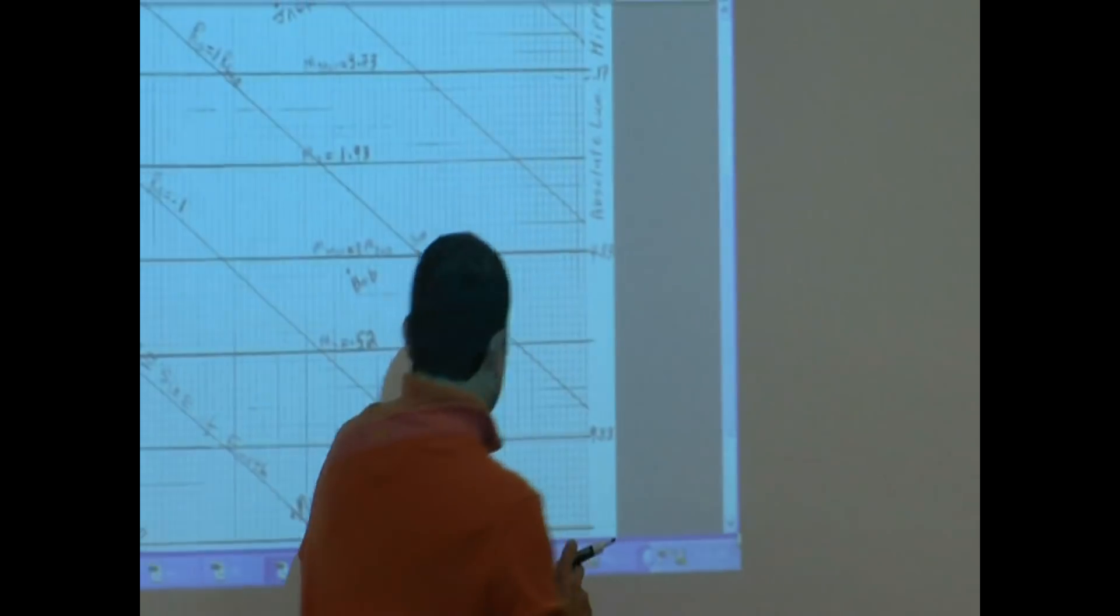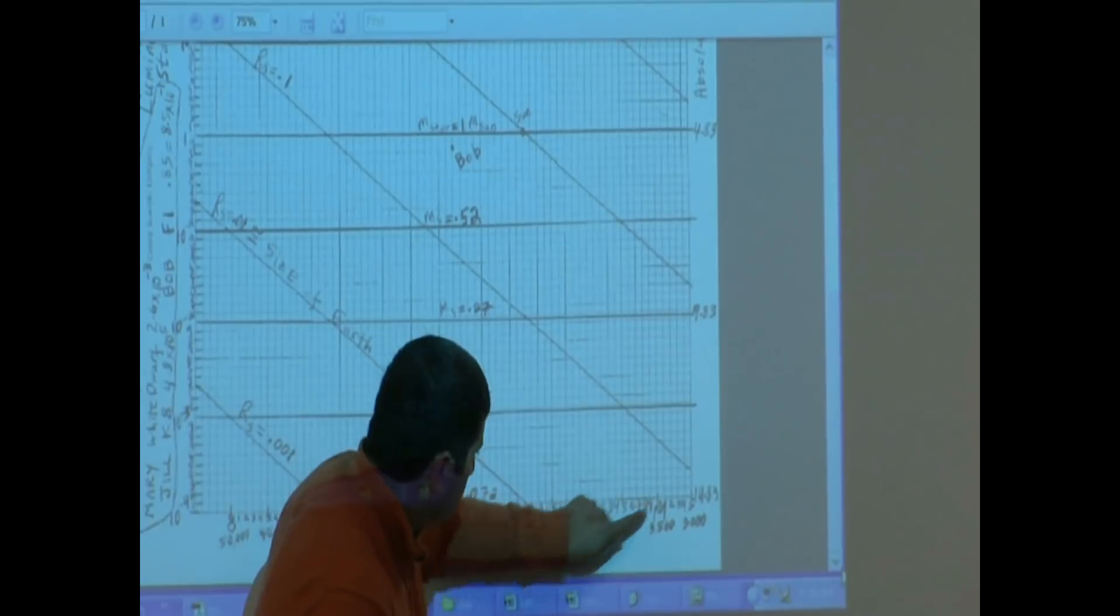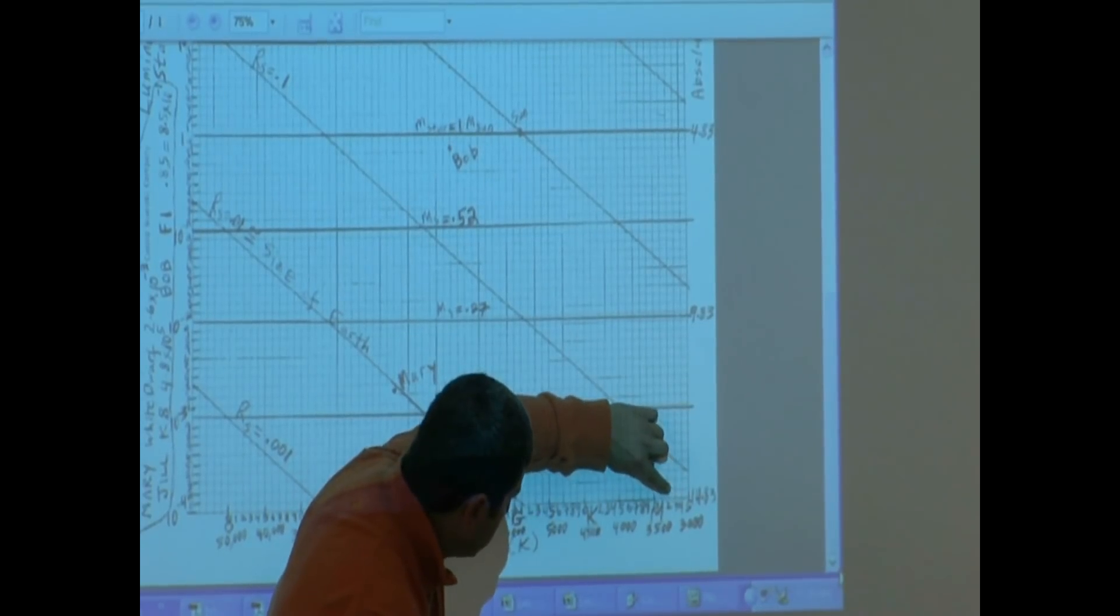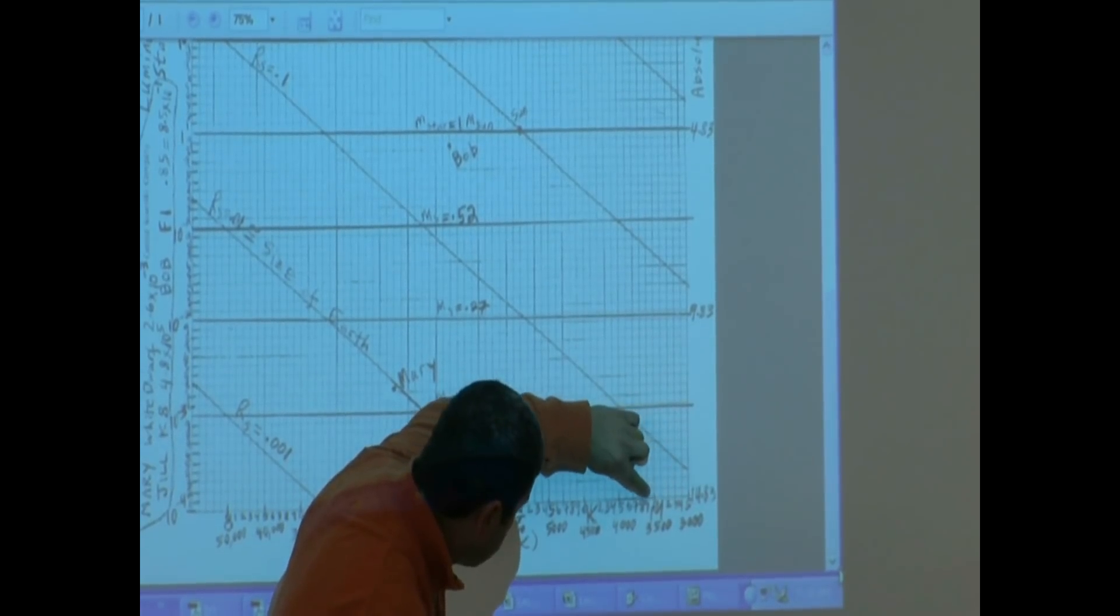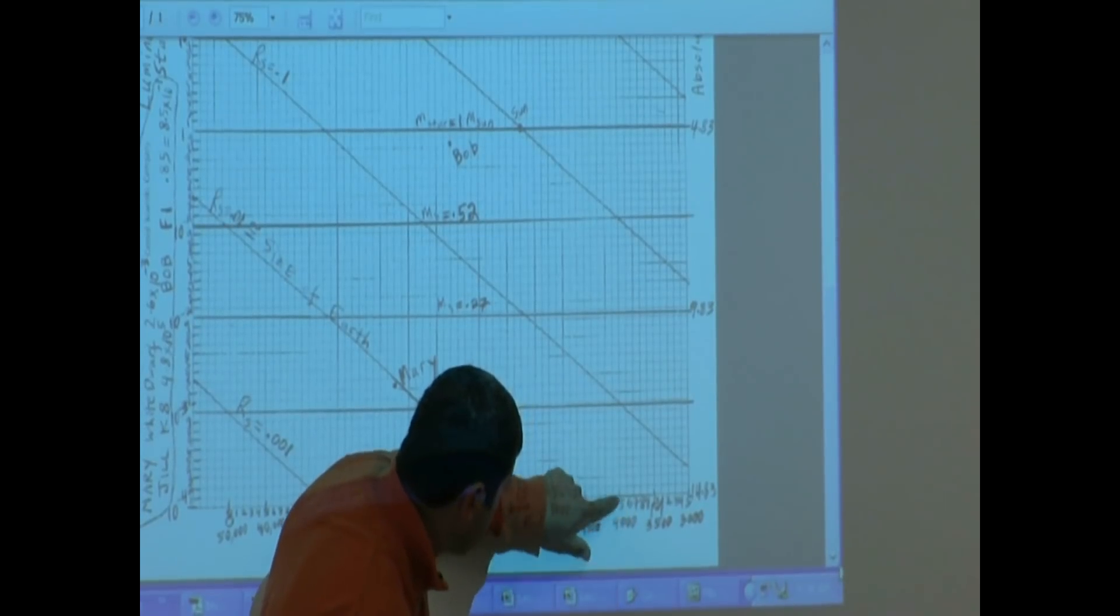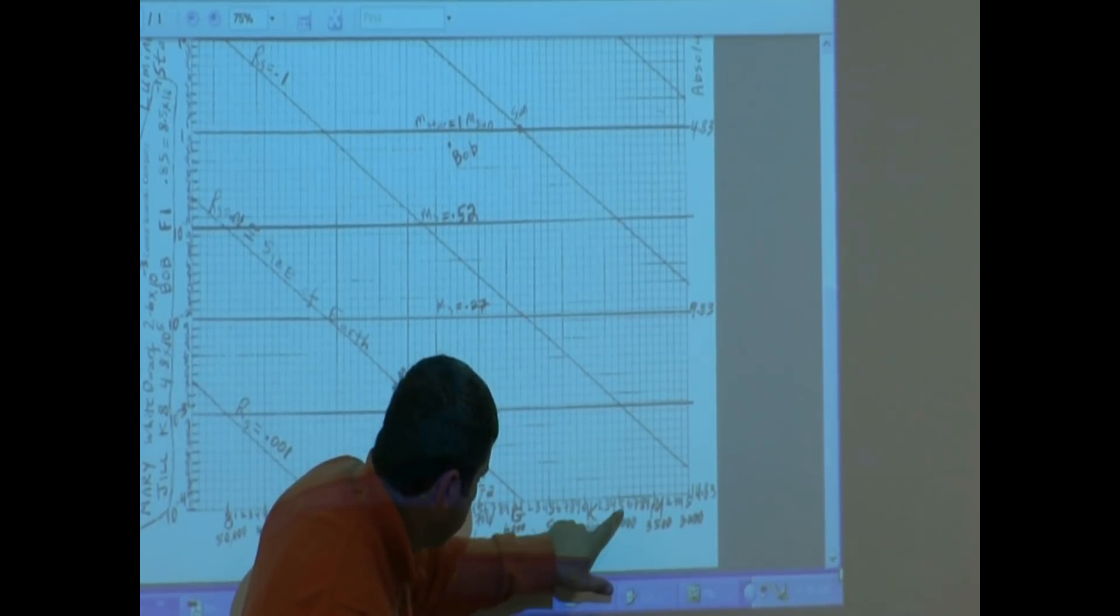Now go down to the tenth line. One, two, three, four, five, six, seven, eight, nine, ten. See, that was 4,000 Kelvin. So what is it?